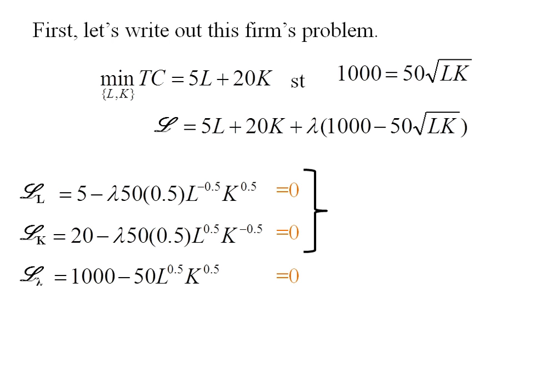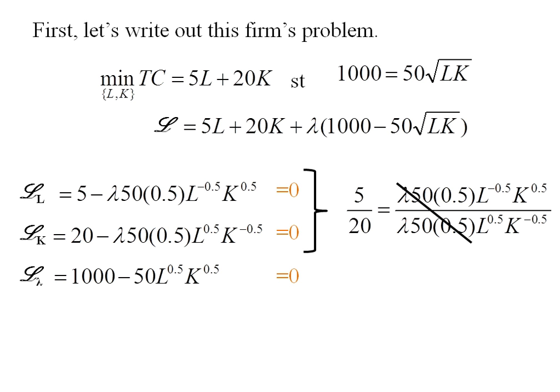The left-hand side is five over twenty, and the right-hand side, since I've subtracted those two terms over, I'm going to be able to do some canceling. The lambdas, the fifties, and the point five all go. Now I just need to rearrange my K's and L's, and the left-hand side is point two five, and the right-hand side is K over L. This is a nice Cobb-Douglas production function, so we are expecting it to reduce nicely. I can take this one more step and call it K equals point two five L.